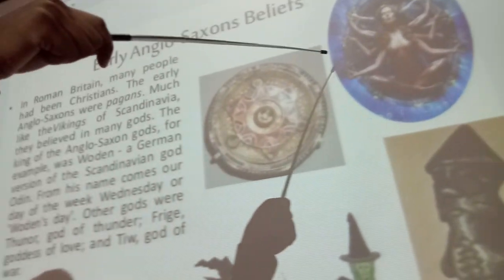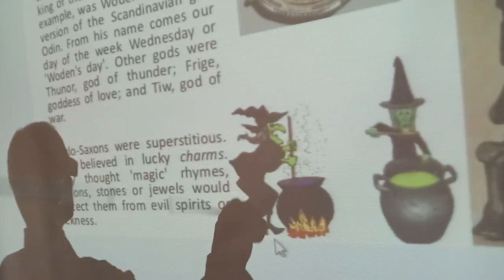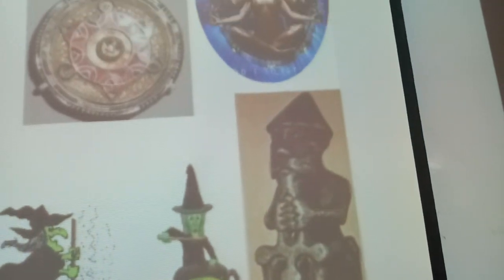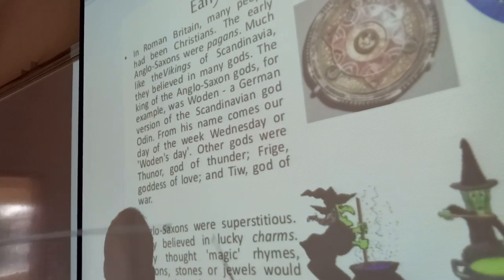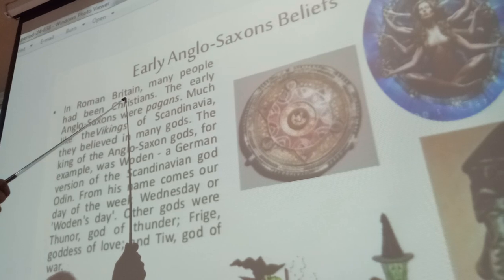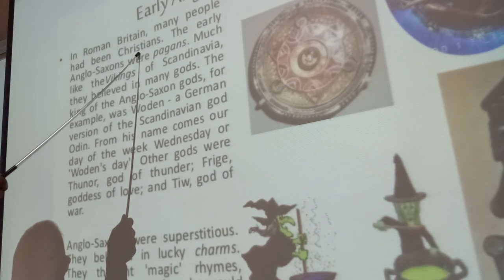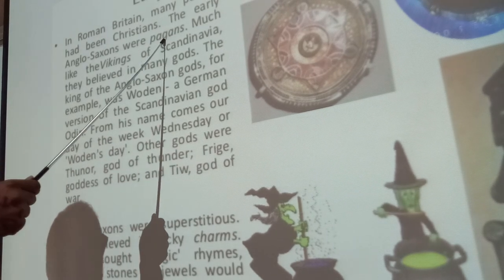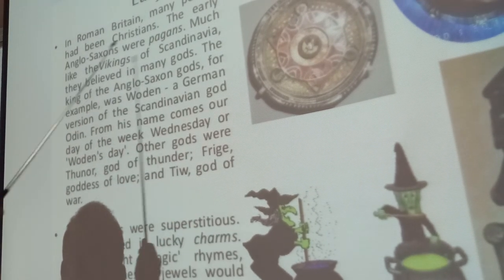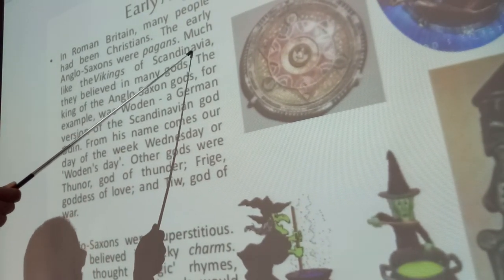Early Anglo-Saxon beliefs: in Roman Britain, many people had been Christians. The early Anglo-Saxons were pagans, much like the Vikings of Scandinavia. They believed in many gods.